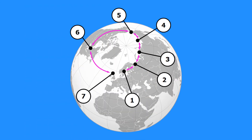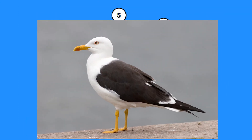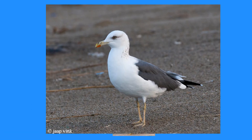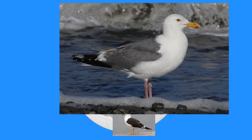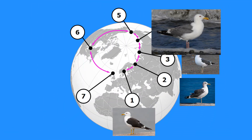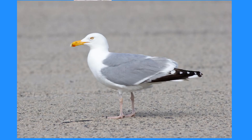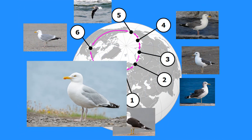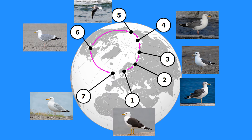The thing is, if you observe lesser black-backed gulls starting off in England and going east around the world, you will see that they become greyer and lighter until you've gone all the way around the arctic and arrived back in England to see that the continuous interbreeding population has ended up with the actual herring gulls.